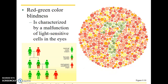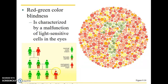Red-green color blindness is a good example — characterized by a malfunction of light-sensitive cells in the eyes. Females tend to be carriers. If a normal color vision female has children with a red-green colorblind man, their daughter will be a female carrier. If that carrier daughter has four children with a normal vision man, the offspring could include a red-green colorblind boy, another female carrier, and two individuals with normal color vision.